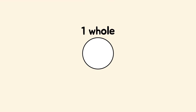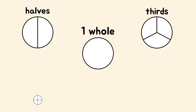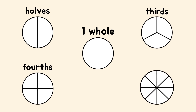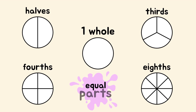A fraction represents a part of a whole. A whole can be partitioned into two equal parts, known as halves; three equal parts, known as thirds; four equal parts, known as fourths; or eight equal parts, known as eighths. It's important to remember that for something to be considered as a fraction, the whole must be partitioned into equal parts.